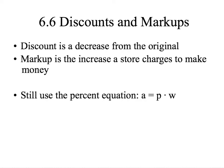6.6, discounts and markups. We're still talking about percentage. It's just what are we doing with this? Discount, as it says, is a decrease from the original. You put something on sale, that's a good example of a discount. Markup here is the increase of surcharges to make money. They might buy something for $10, mark it up to $20, and then they made money on that product. That's how businesses make money. We're still using the percent equation. Don't forget about that.